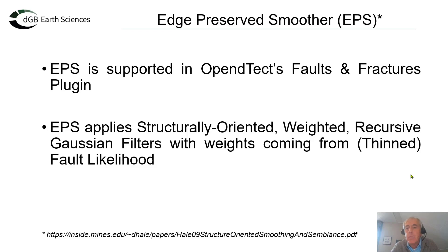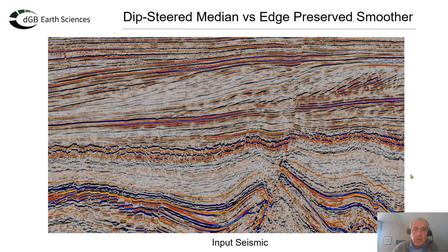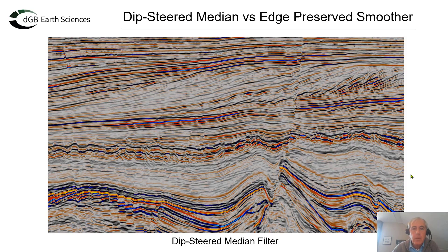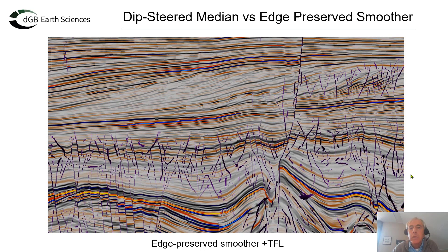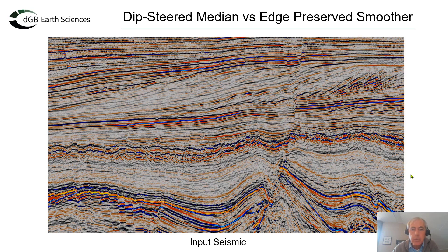The weights are coming from the thinned fault likelihood or the fault likelihood volume. This is the filter that was developed by Dave Hale. Now we're going to compare the seismic dipsteered median filter and the edge preserved smoothing filter. This is my input seismic — noisy — cleaned up with a dipsteered median filter, sharpened with the edge preserved smoother, overlaying the thin fault likelihood, and going back to the original seismic data.